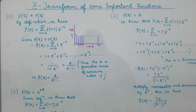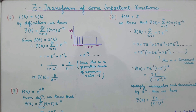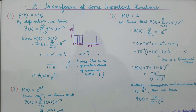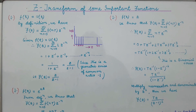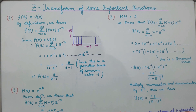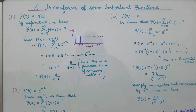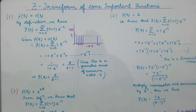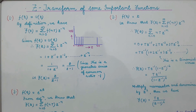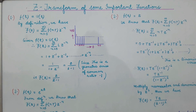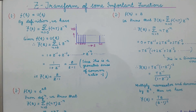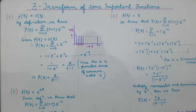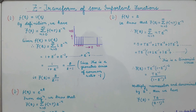Hello everyone, welcome to the Signal Systems class. In this presentation, we will discuss the Z transform of some important functions. We have already derived the formula for finding the Z transform of a given function f(t) in the previous class, and we found that the formula is given by F(Z) = summation from n=0 to infinity of f(nT) into Z to the power minus n. By making use of this formula, we will find out the Z transform of some important functions.